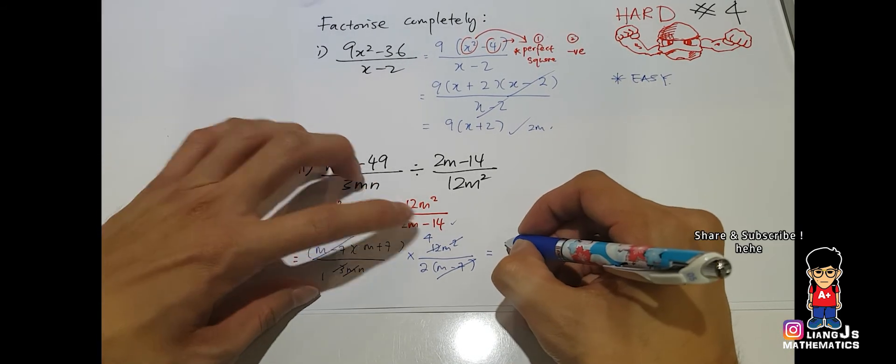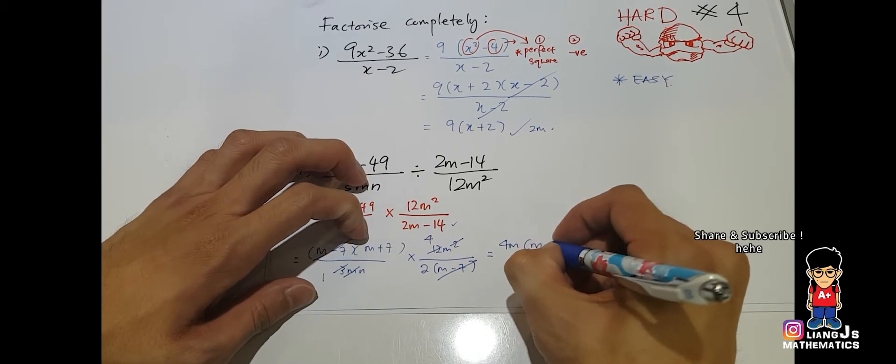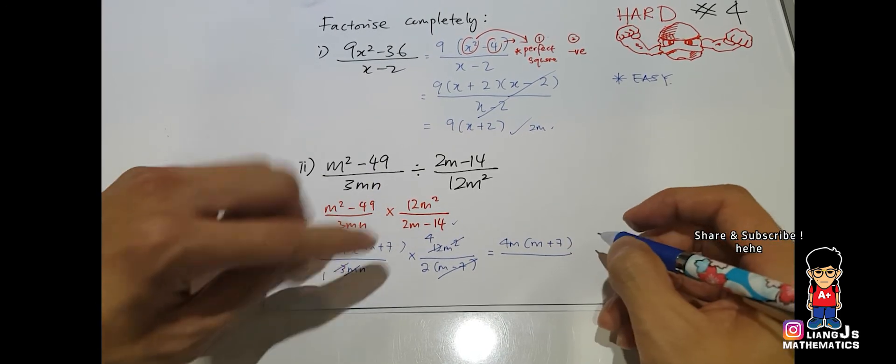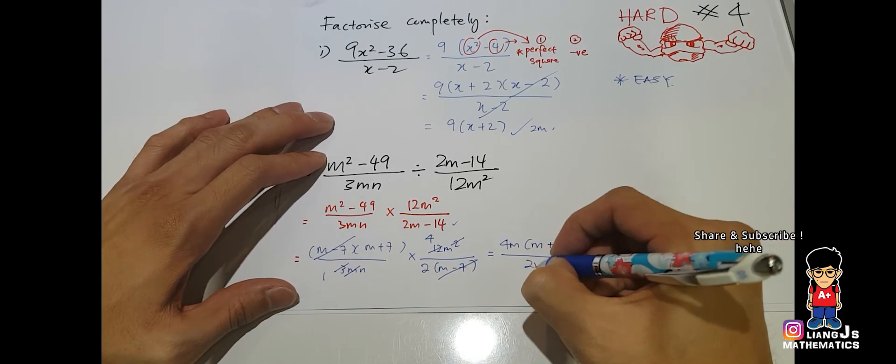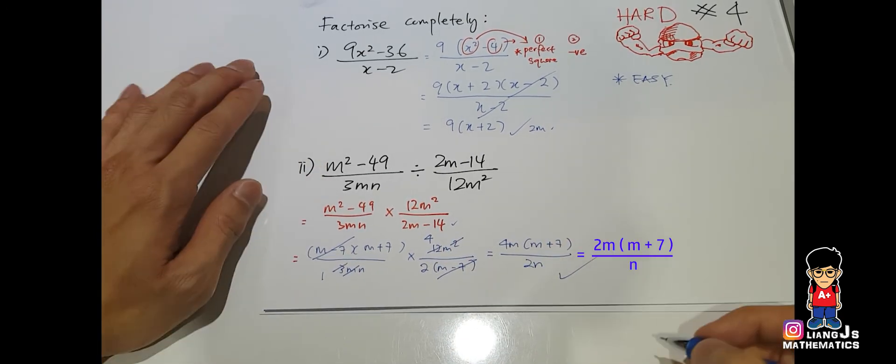Then, we will take the 4m left over. Multiply with this one. Over. This one, 2n. Like this. And done. That's your answer. Great.